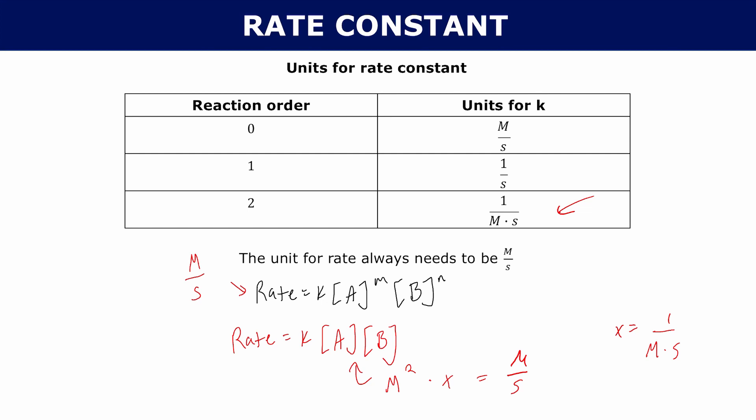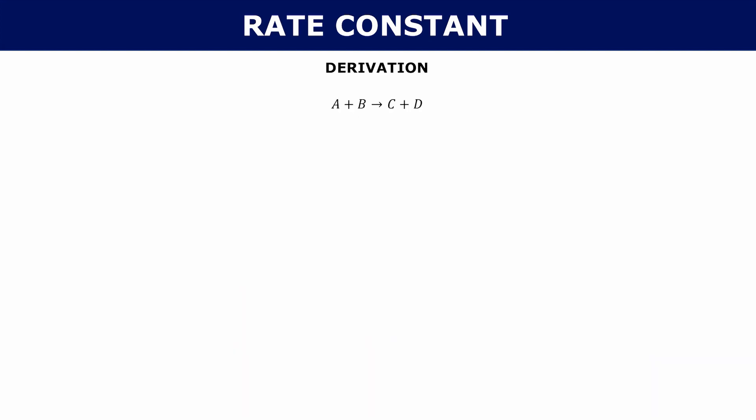You can do the same process for all different reaction orders and you'll get the same pattern shown in this table. Now, let's talk about the derivation of the rate constant. Imagine you have a reaction where A and B are reacting to form C and D.